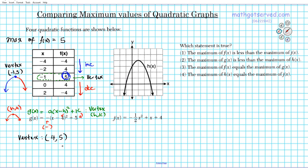So the vertex tells us what the maximum value is. So if the peak here is 4, 5, then we automatically know that for the function g of x, the maximum of g of x is 5.